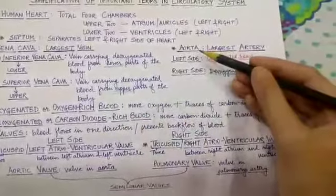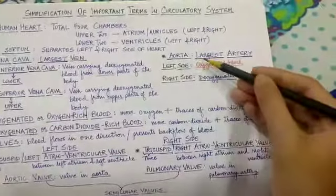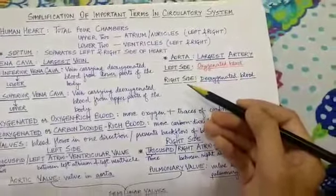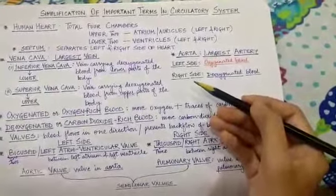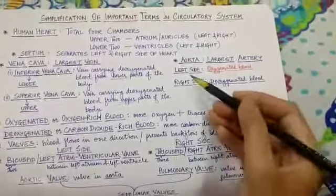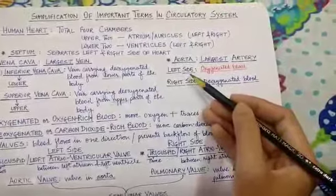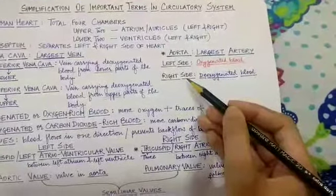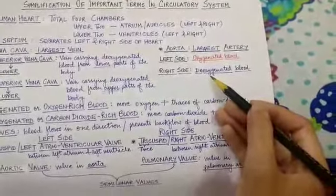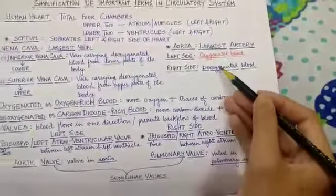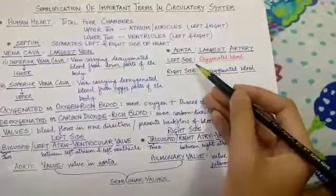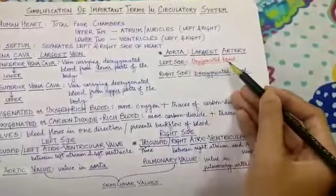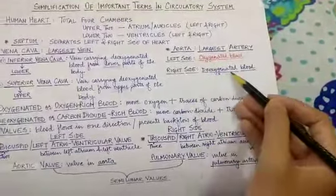Likewise, the aorta is the fourth term, which means it is the largest artery. One important thing to remember: if you look at the diagram in most books, even NCERT, you will see that the left side of the heart is colored red, which denotes oxygenated blood, and the right side is colored blue, denoting deoxygenated blood. That is why I have used different inks here so that you can remember. So blood coming from or exiting the left side of the heart is oxygenated blood, and the right side carries deoxygenated blood.